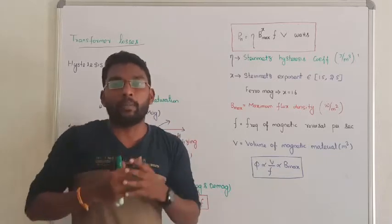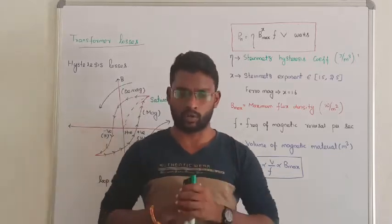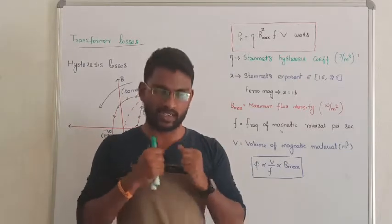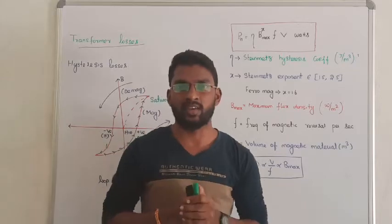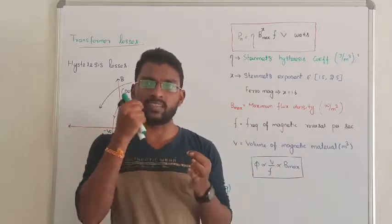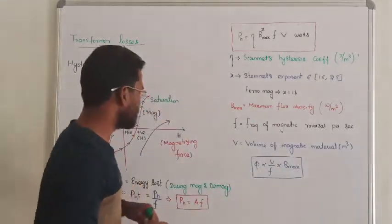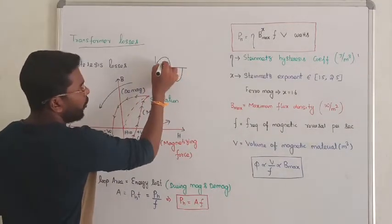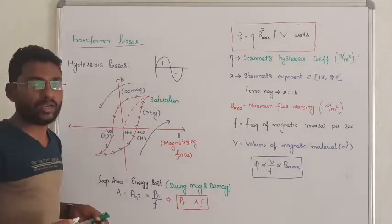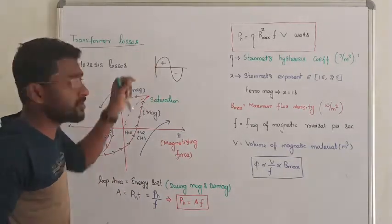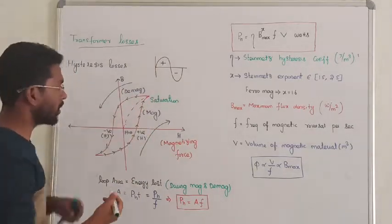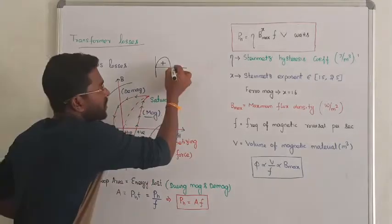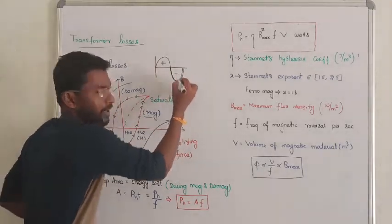One more thing about ferromagnetic material - there are two polarities, one is positive and another one is negative cycle. The transformer is supplied with AC supply.